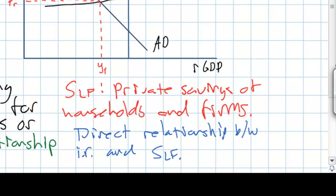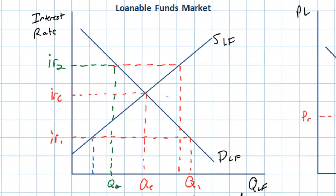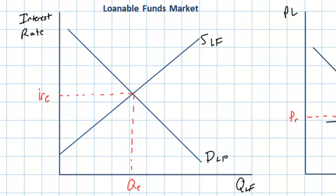So in the loanable funds market, we have a downward-sloping demand curve representing households' and firms' demand for funds for private investment in homes and capital goods, and an upward-sloping supply curve representing the willingness of households and firms to save. At higher interest rates, firms and households wish to save more yet borrow less. At lower interest rates, they wish to save less and borrow more. The question we must now ask is: does a government's fiscal policy have any effect on the loanable funds market?